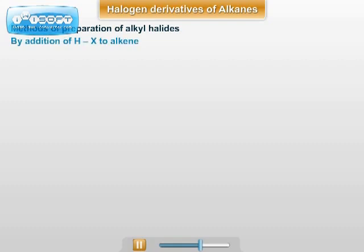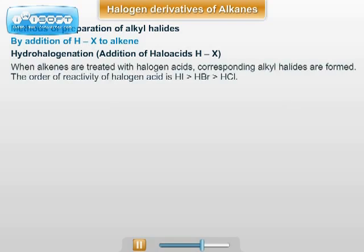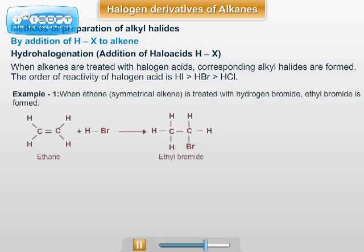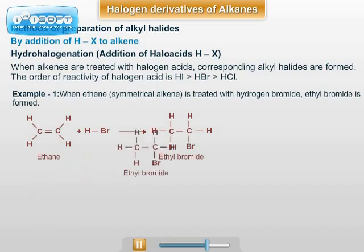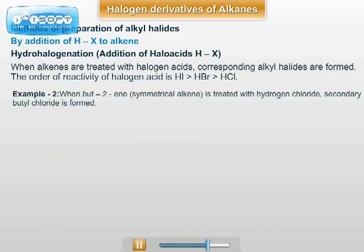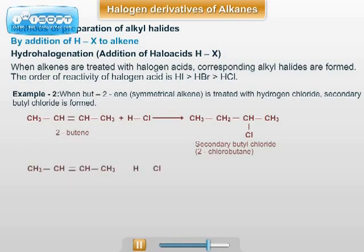The next method of preparation is the addition of HX, that is halogen acid, to alkenes. When an alkene is treated with halogen acid, alkyl halides are formed. The order of reactivity of halogen acids is HI > HBr > HCl. For example, ethene is treated with hydrogen bromide and ethyl bromide is formed. Example two: when but-2-ene is treated with hydrogen chloride, secondary butyl chloride is formed.